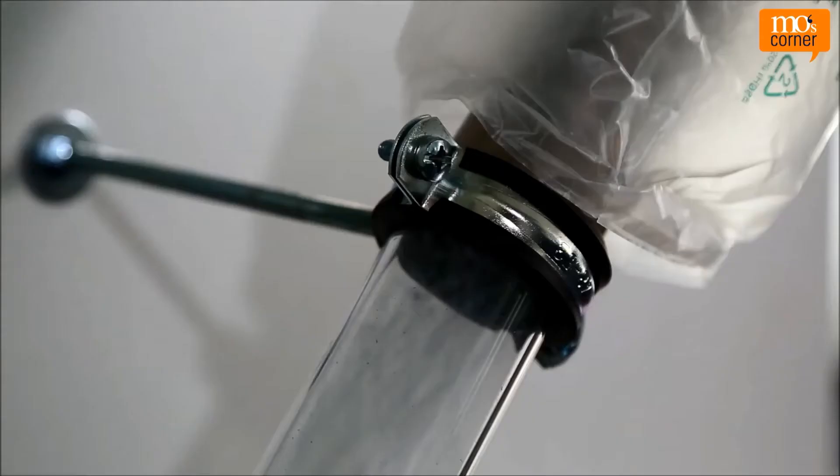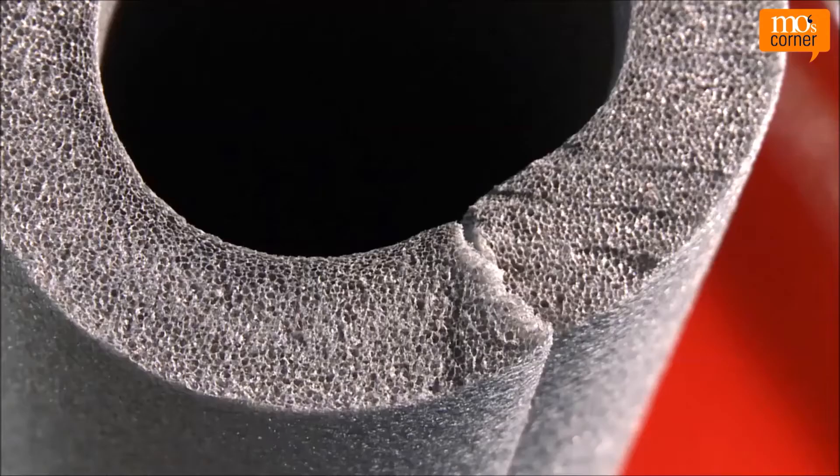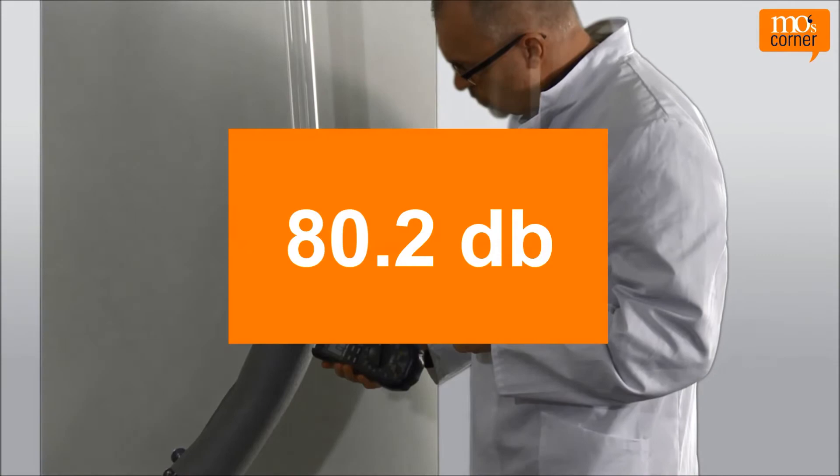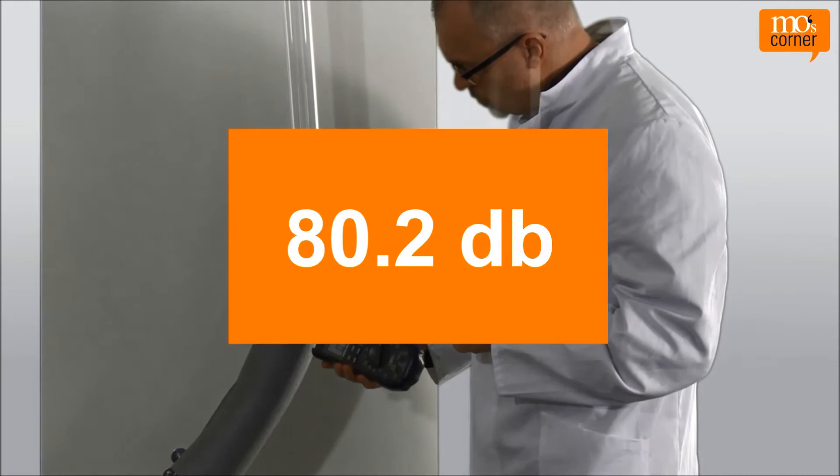Now the secret favorite: foam pipe insulation should work particularly well with its air pockets. Fitting it, at least, is quick and unproblematic. 80.2 decibels. The result is sobering. Who would have thought it would insulate so poorly?